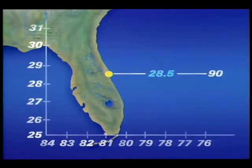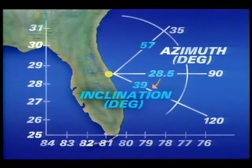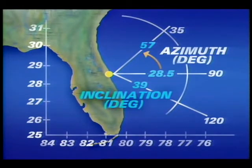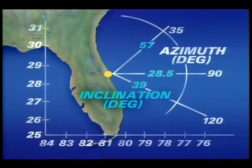If launch azimuth — the direction of flight at launch measured eastward from due north — is increased from due east, the orbital inclination angle increases as well as the maximum latitude of the north-south ground track. The maximum practical inclination from a Kennedy Space Center launch is 57 degrees. If launch azimuth is decreased from due east, orbital inclination once again increases as well as the latitude limits of the ground track. This limit is imposed for safety considerations in order to keep the spacecraft and its booster system from flying over land masses during the ascent phase.